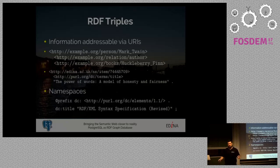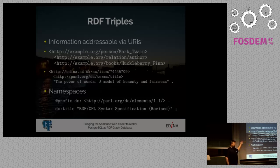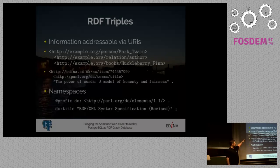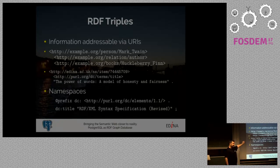Instead of the entity-attribute-value model that we're used to, we've given them fancy names — now they're called subject, predicate, object in RDF. The subject is the thing we're talking about, the predicate is the property or action taken by the subject, and the object is the recipient of that property or action. As these are three things, we call them RDF triples, and triples usually have URIs encoded in them that let you instantly access the referenced thing.